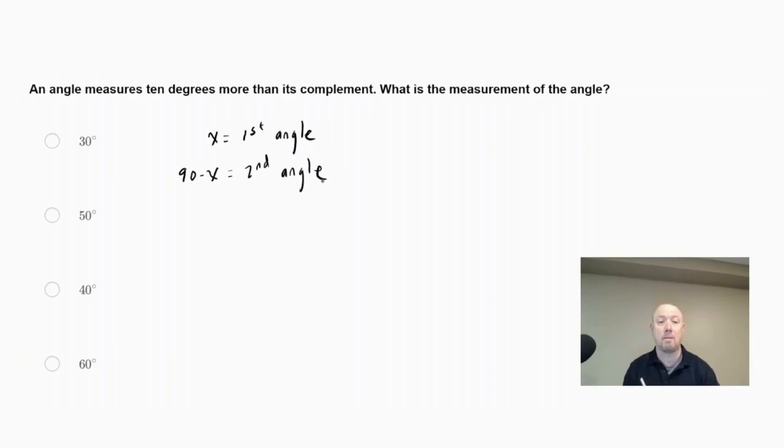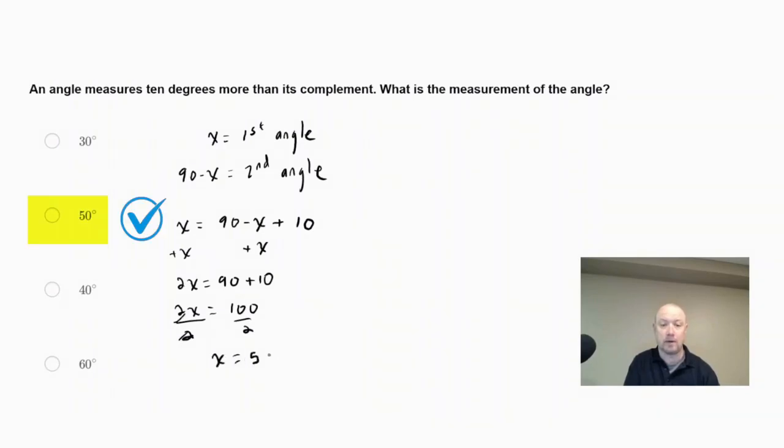Now it says that an angle measures 10 degrees more than its complement. So that means the complement, if we add 10 to that value, that would be equivalent to our first angle. So we can set up an equation x equals 90 minus x, which is the complement, plus 10 degrees. Now we have to solve for x here. If we add x to both sides, we would get 2x equals 90 plus 10. If we combine the 90 and the 10, we get 100. So we get 2x equals 100. If we divide both sides by 2, we're going to get x equals 50 degrees.